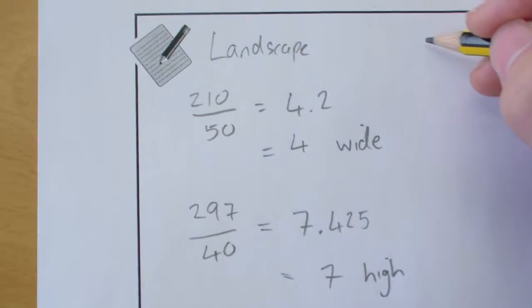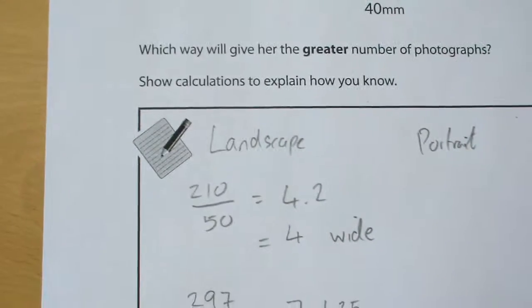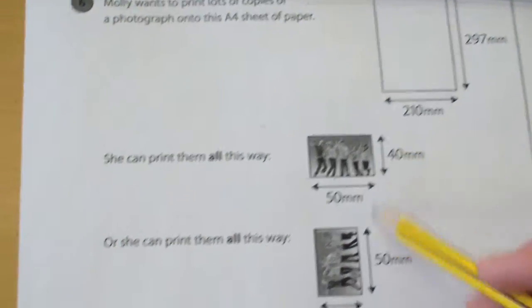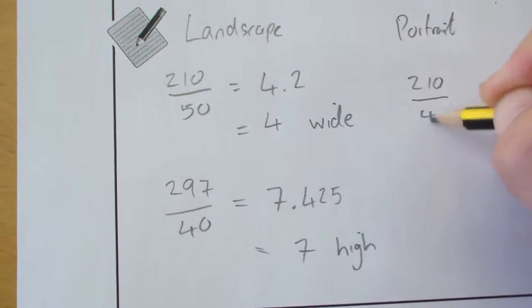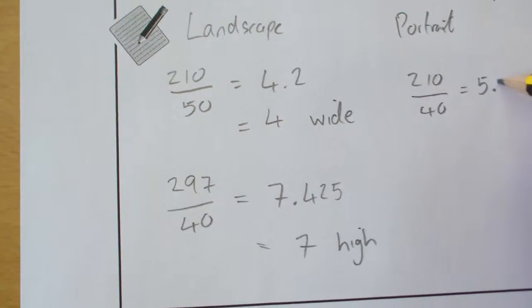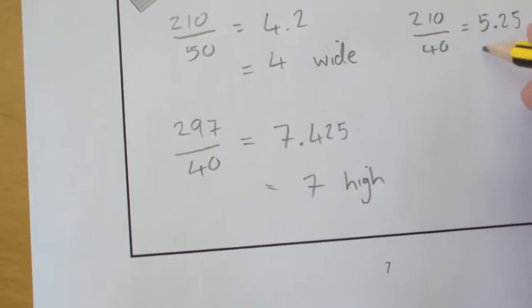So it's exactly the same process. We're going to do 210 divided by 40, which will give an answer of 5.25, which will mean that it is 5 wide.